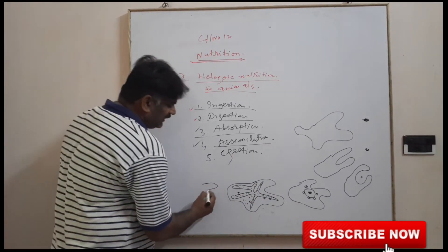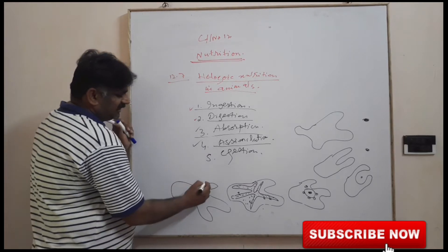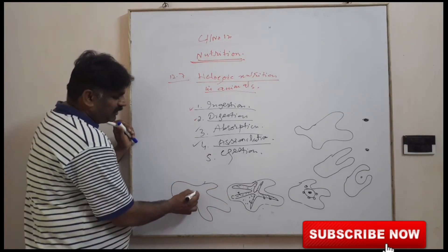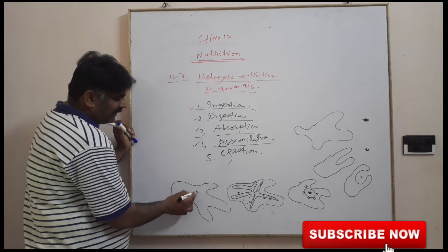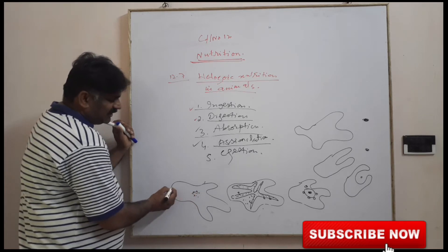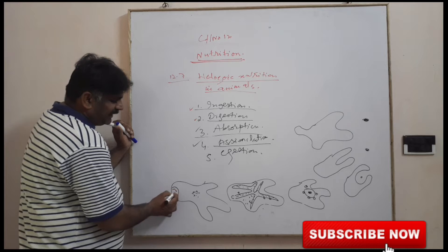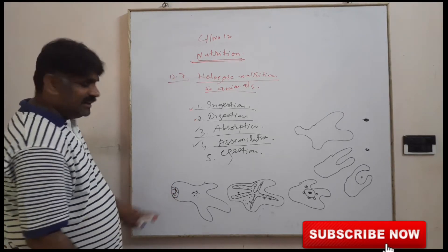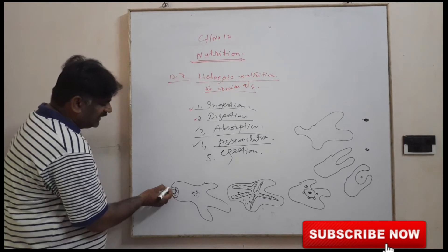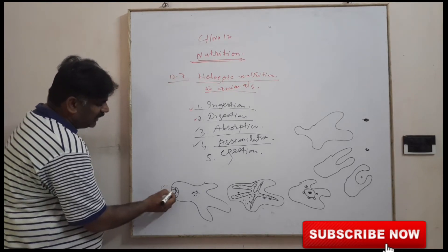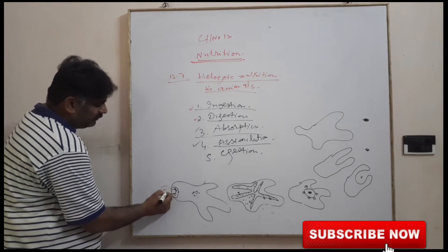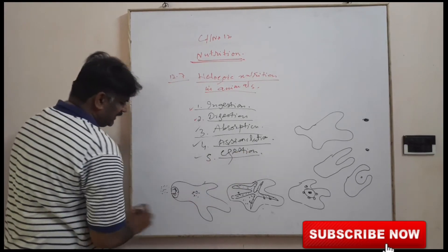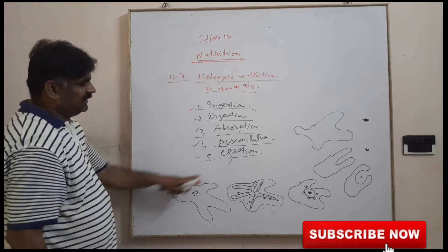Now, the remaining undigested food particles — after complete digestion, whatever is undigested — just fuse with the plasma membrane of amoeba and are removed out. This is the final step, called egestion.